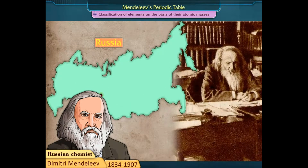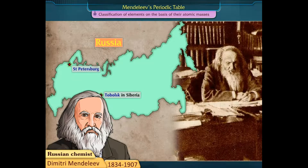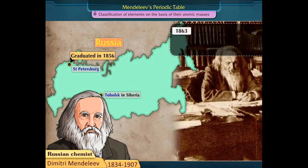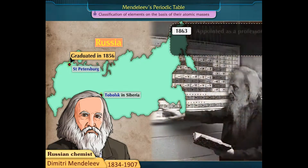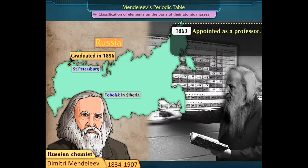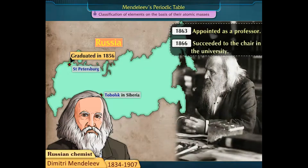Mendeleev was born at Tobolsk in Siberia. He studied science at St. Petersburg and then graduated in 1856. In 1863, he was appointed as a professor and in 1866, he succeeded to the chair in the university.